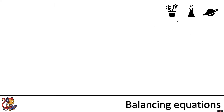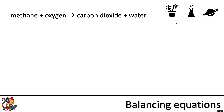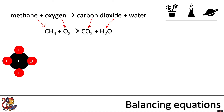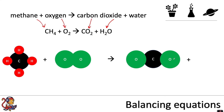Now let's go through another example. Methane plus oxygen makes carbon dioxide plus water is our word equation. As symbols: CH₄ plus O₂ makes CO₂ plus H₂O. However, at the moment this is not balanced. You can see there are two H's on the right but four on the left, and two oxygens on the left but three on the right. So we must balance this equation.